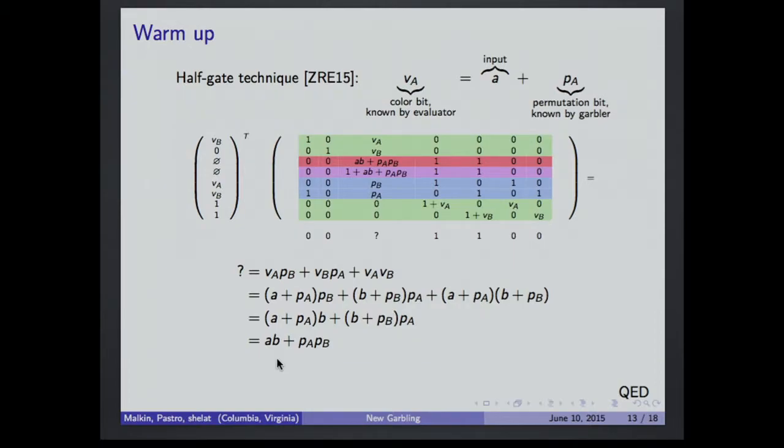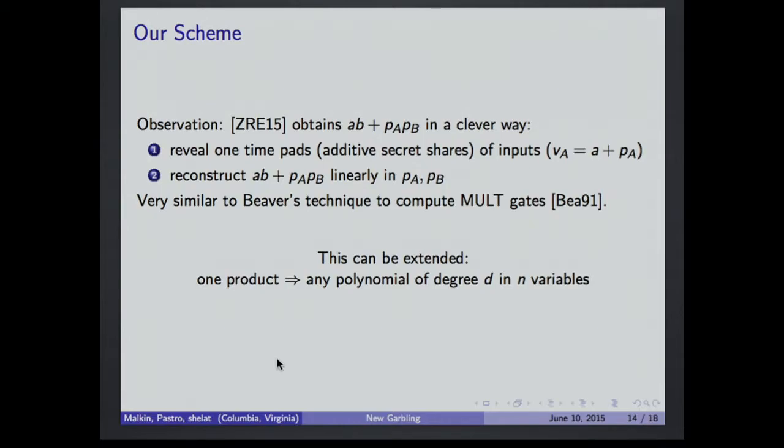So let's move on. This is a good starting point. Look at this. Here, we are reconstructing A times B plus PA PB, which is quadratic in AB, just by a linear function from the evaluator's perspective on PB and PA. This is a very good thing. So you can observe that you can obtain A times B plus this in a clever way if you use this garbled half-gate garbling. Essentially, what they do is they reveal a one-time pad of the inputs, the color bit, and then they can reconstruct this quantity linearly in PA and PB. It's very similar to Beaver's circuit randomization. And it can be extended to any polynomial relation. And this is how our scheme works.